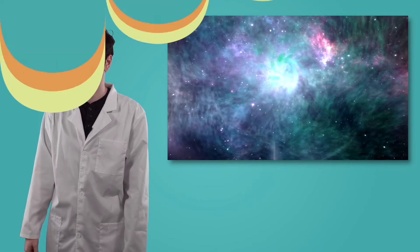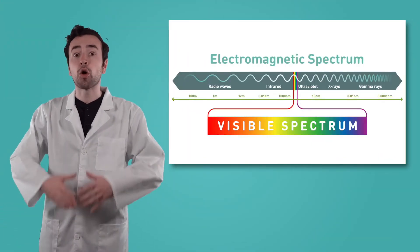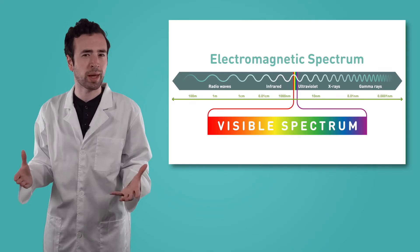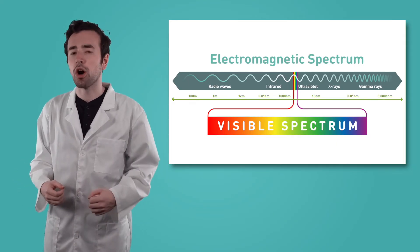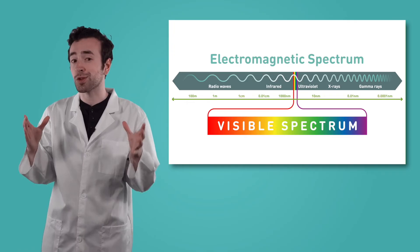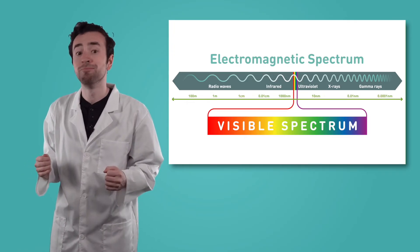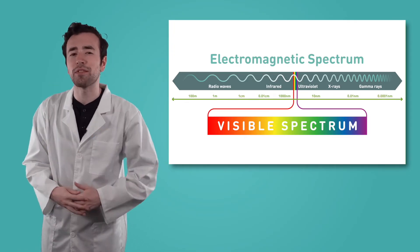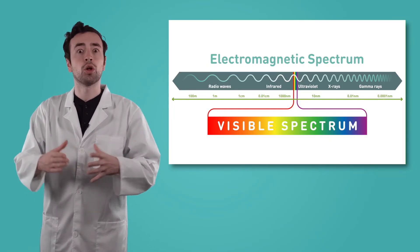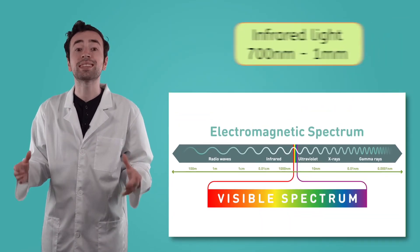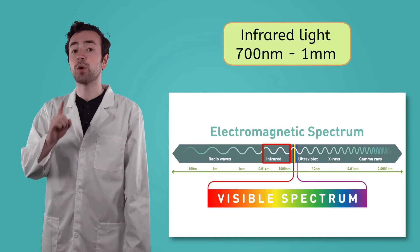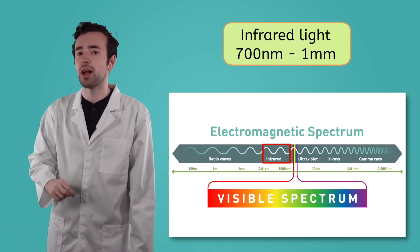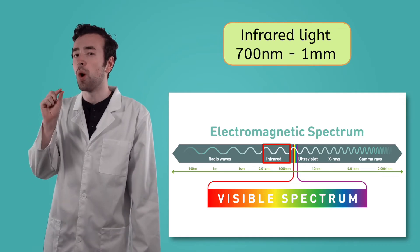Gamma rays are not often found on Earth, though a very small percentage of lightning strikes can contain gamma rays. There are also wavelengths of light that are longer than the visible spectrum. Red has the longest wavelength of visible light. When the wavelength of light is longer than red, we get infrared light. Infrared wavelengths range from 700 nanometers to 1 millimeter, which is about the width of the tip of a sharpened pencil.